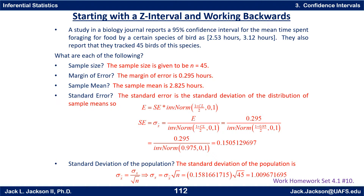For the standard deviation of the individual values in the population: remember that sigma of the x-bars equals sigma of the x's divided by the square root of n. Solving for sigma gives square root of n times sigma of the x-bars. We found sigma of the x-bars to be approximately 0.1505, so multiply by the square root of 45 to get just slightly bigger than 1 for the standard deviation of the population.